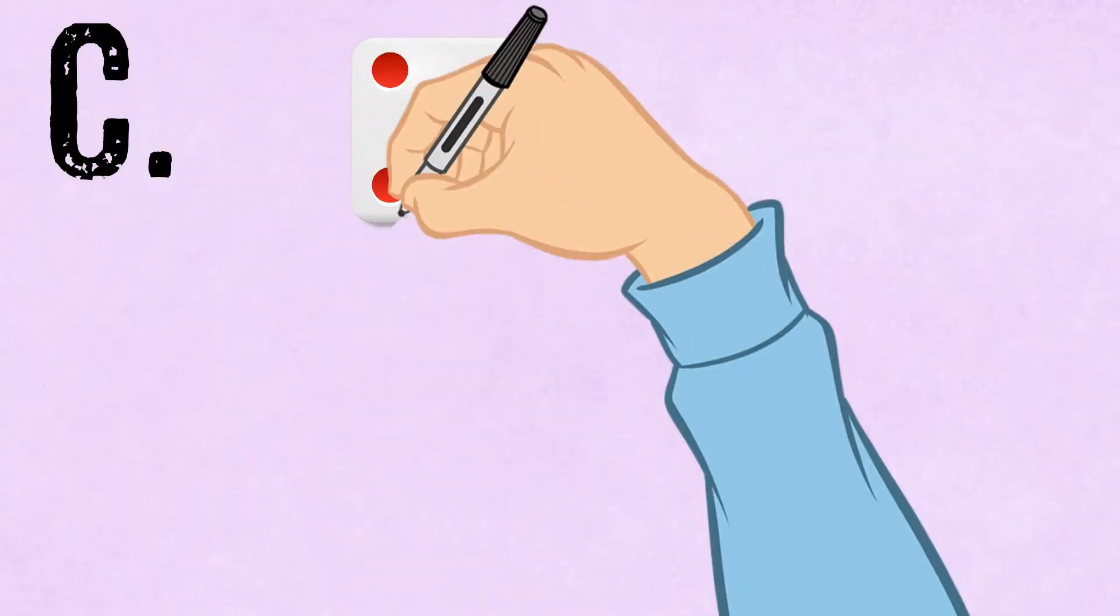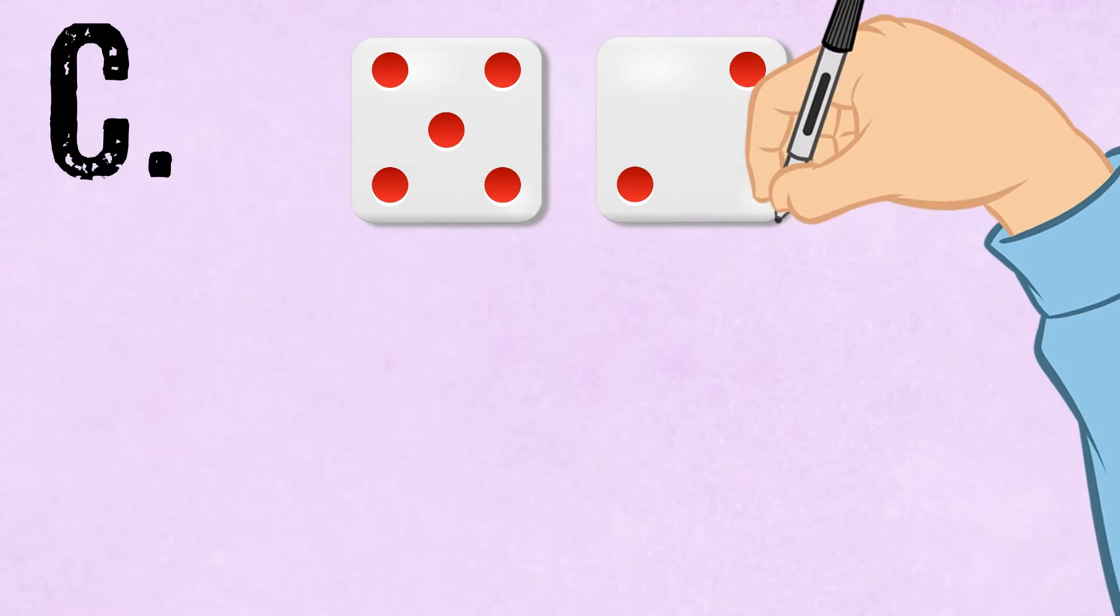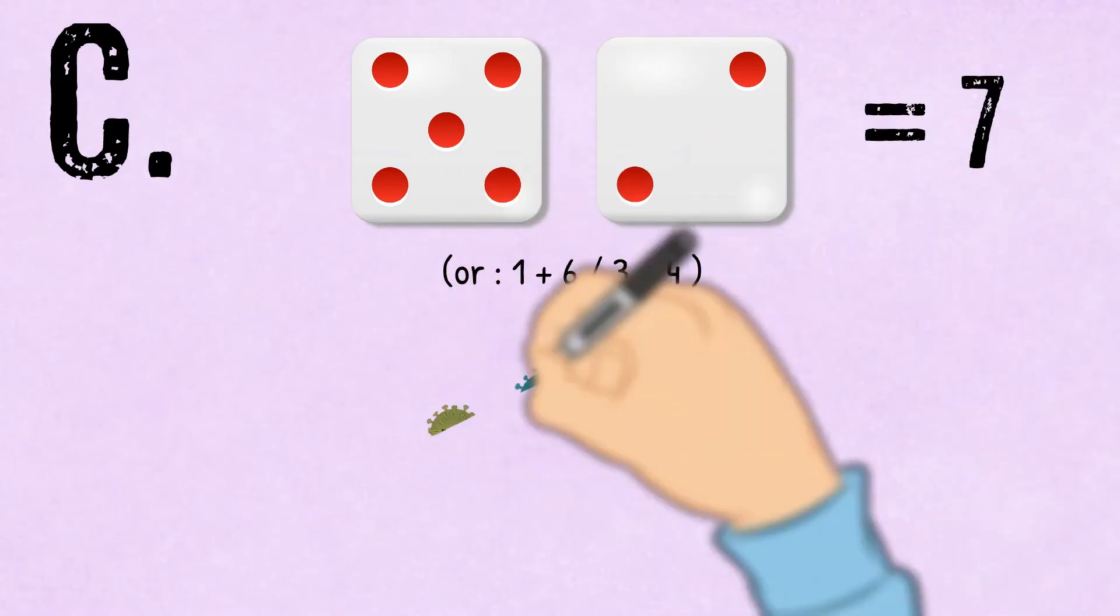If the total of the two dice is seven, then everybody is saved and there is no infection.